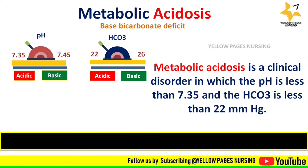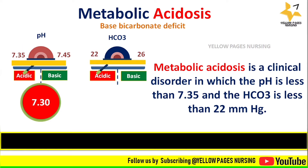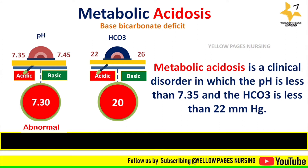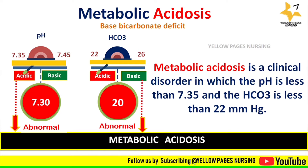Metabolic acidosis is a clinical disorder in which the pH is less than 7.35 and the bicarbonate is less than 22. The normal pH ranges between 7.35 and 7.45, and the normal bicarbonate ranges between 22 and 26. For example, a pH of 7.30 and bicarbonate of 20 — both below normal — indicates metabolic acidosis.